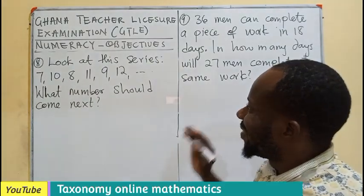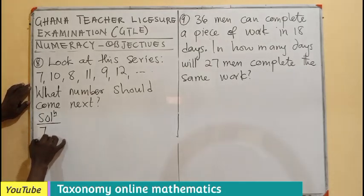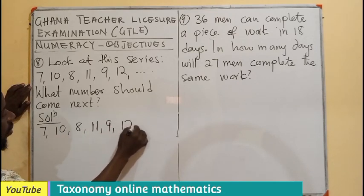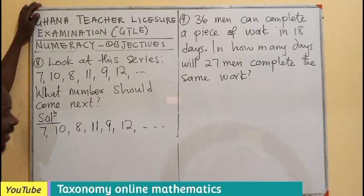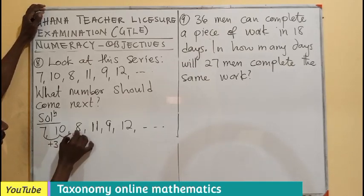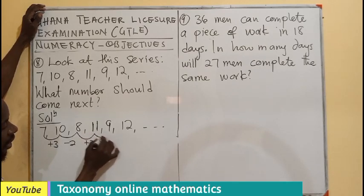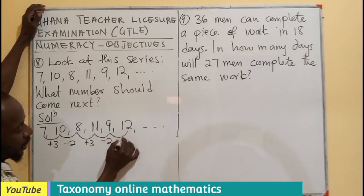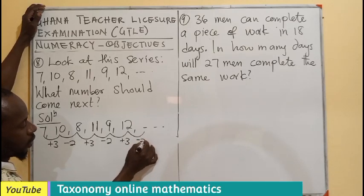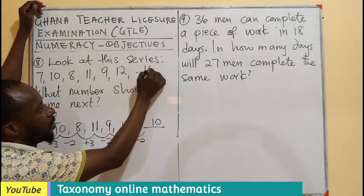Question 8. Look at this series, which we are having 7, 10, 8, 11, 9, and 12. Let's see the pattern between the first and the second term. I believe I can see addition of 3. I can see a reduction of 2. Addition of 3, a reduction of 2. Addition of 3. So I need a reduction of 2. And that will give us 10. So the next term we are looking for is 10.